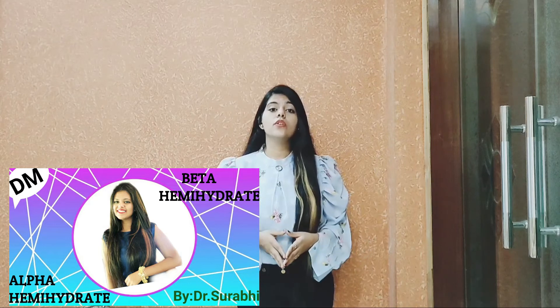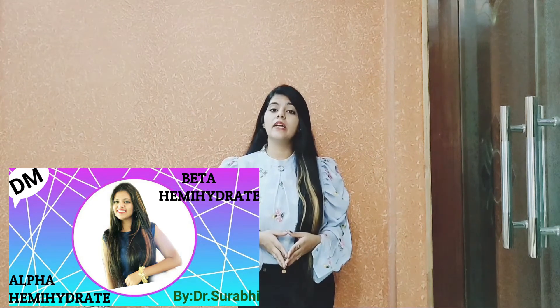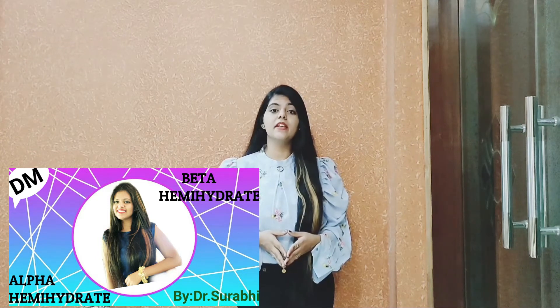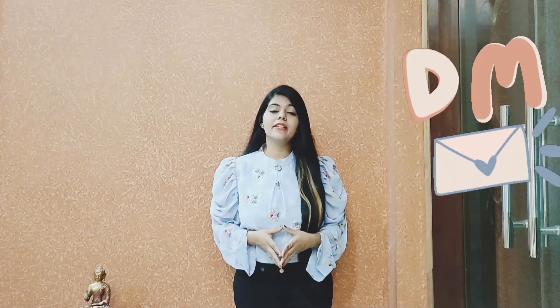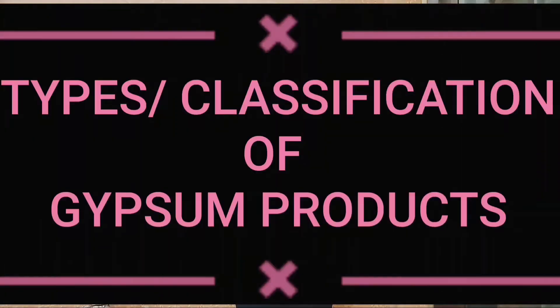As you all know, in my previous video I have covered one important question of dental material — that is the difference between alpha-hemihydrate and beta-hemihydrate. Also in this video, I am going to cover one important part of dental material. Definitely a question will come on this topic, that is the types of gypsum products.